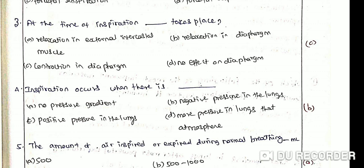Inspiration occurs when there is: Option A: No pressure gradients. Option B: Negative pressure in the lungs. Option C: Positive pressure in the lungs. Option D: More pressure in the lungs than atmosphere. The correct answer is Option B: Negative pressure in the lungs. Inspiration can occur if the pressure within the lungs is less than the atmospheric pressure, so there is a negative pressure in the lungs compared to atmospheric pressure.